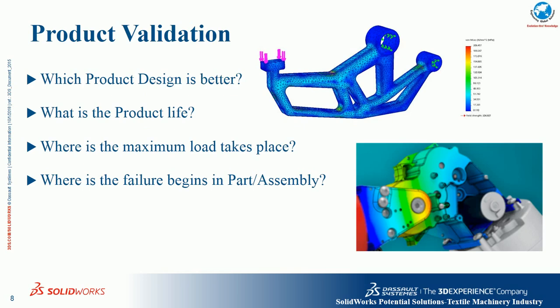The next topic is product validation. Every product we manufacture raises the question: which design is better? We have different alternative ideas and iterations that require costly trial-and-error methods. Here, instead of physical trials, we can evaluate which product design is better, determine the product life under working circumstances, find where maximum load occurs, and where the first failure begins — giving us full awareness of the product we manufacture.